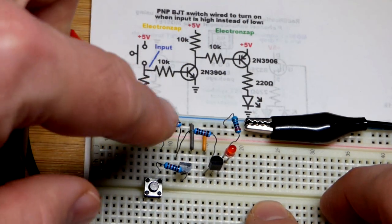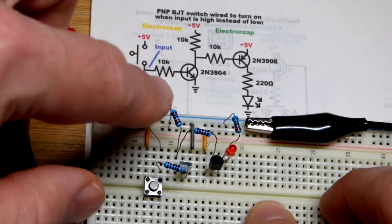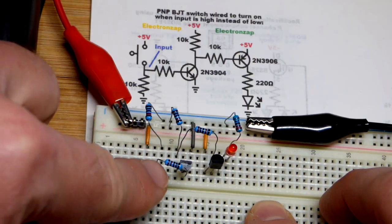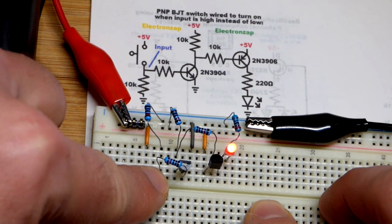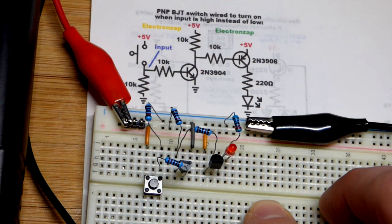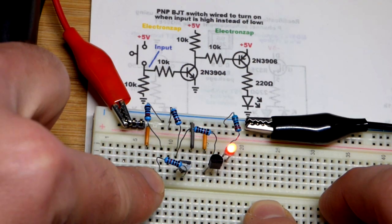Here we have a mechanical switch that when you close it makes a high side connection. In a practical circuit you wouldn't be using a mechanical switch, but it could be a digital signal.